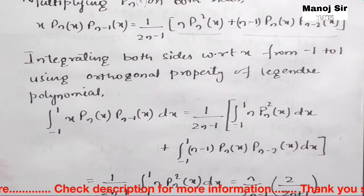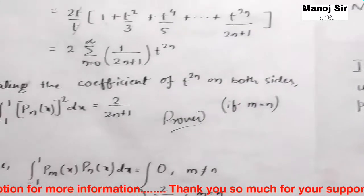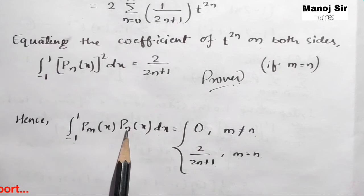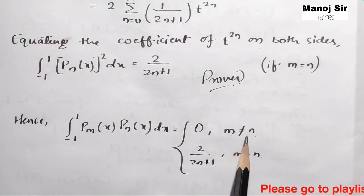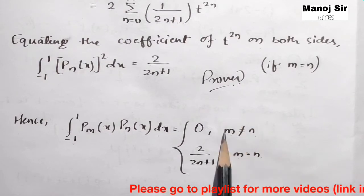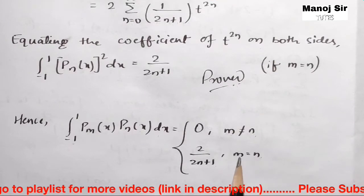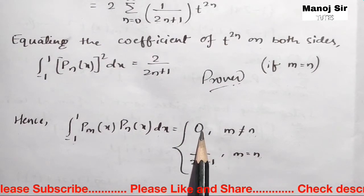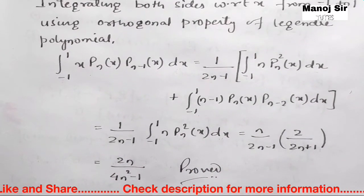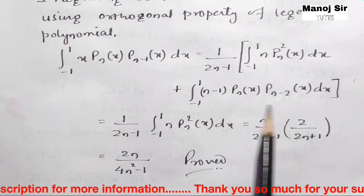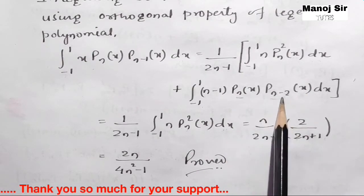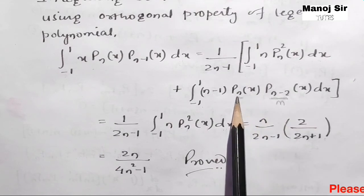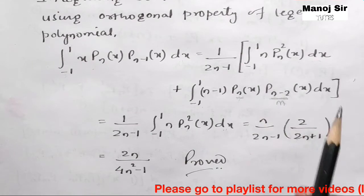Now we apply the orthogonality property of Legendre polynomials: ∫₋₁¹ Pₘ(x)·Pₙ(x) dx = 0 when m ≠ n, and equals 2/(2n+1) when m = n. For the second term, we have Pₙ(x) and Pₙ₋₂(x), where the indices n and n−2 are not equal, so that integral equals zero.